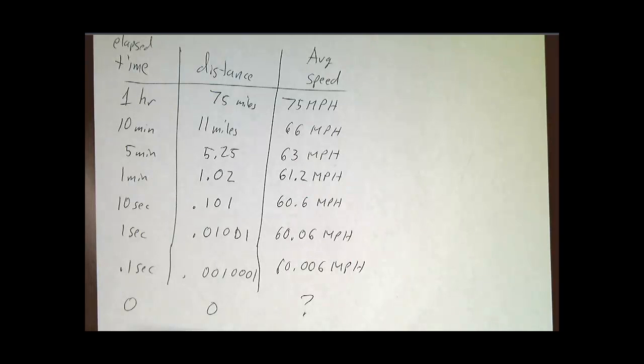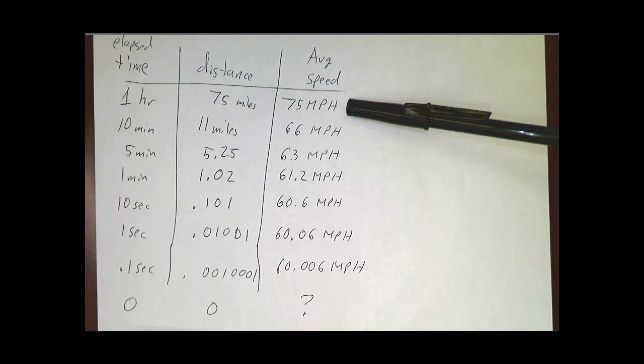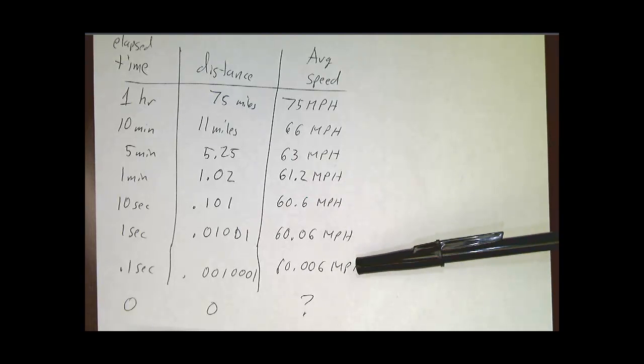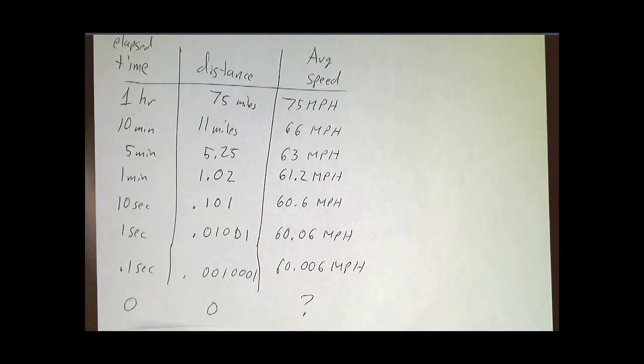So the way that you get all of these changes is by taking a limit. You say how far, what was your average speed for the last hour, last 10 minutes, last 5 minutes, last minute, last 10 seconds, 1 second, tenth of a second, and you take a limit. In this case it sure looks like the limit is 60 miles an hour, and as long as you're not doing this on Shoal Creek Boulevard, you're probably pretty safe from the cop.